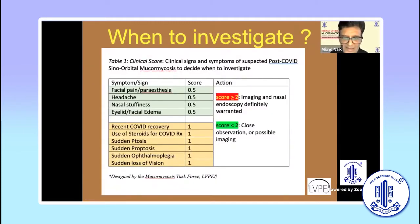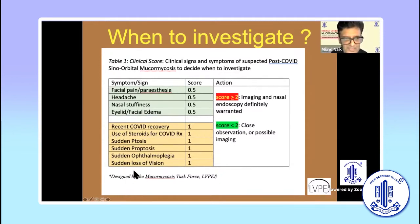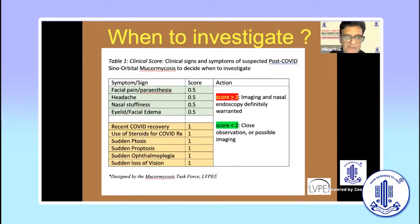Although yet to be validated, we have designed a scoring system where we have assigned a value of 0.5 to each of the non-specific symptoms the patient comes with, and a score of 1 to the more obvious signs we take up as clinicians. We recommend that anyone who has a score above 2 should undergo further evaluation in the form of endoscopy and imaging.